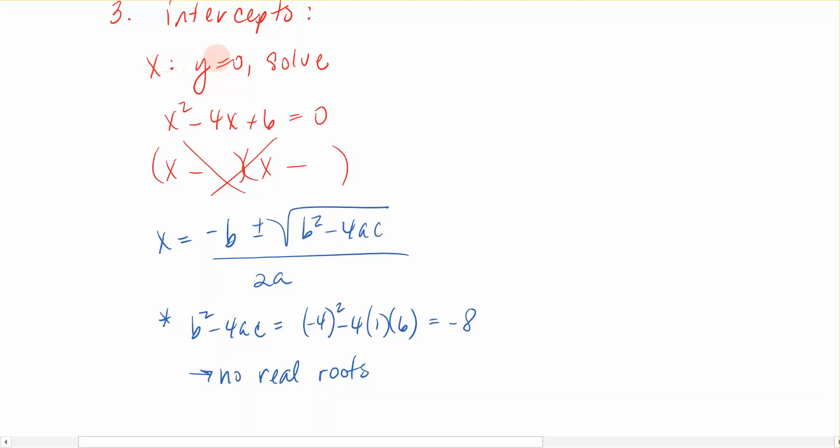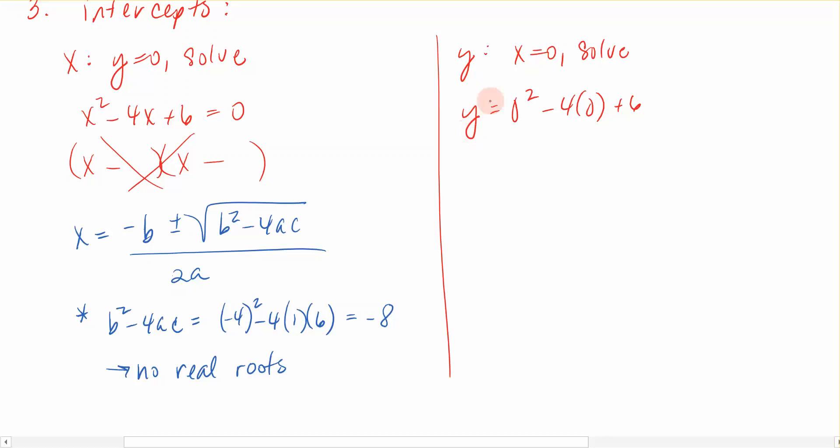So now that I know that I've done the x-intercepts, what do we do next? We need to find the y-intercept. So that is where I'm going to let x = 0 and solve. If this is my function, I can see that I have 0² - 4(0) + 6, and that's equal to y. That just means 0 - 0 + 6. So this is going to cross the y-axis at 6.